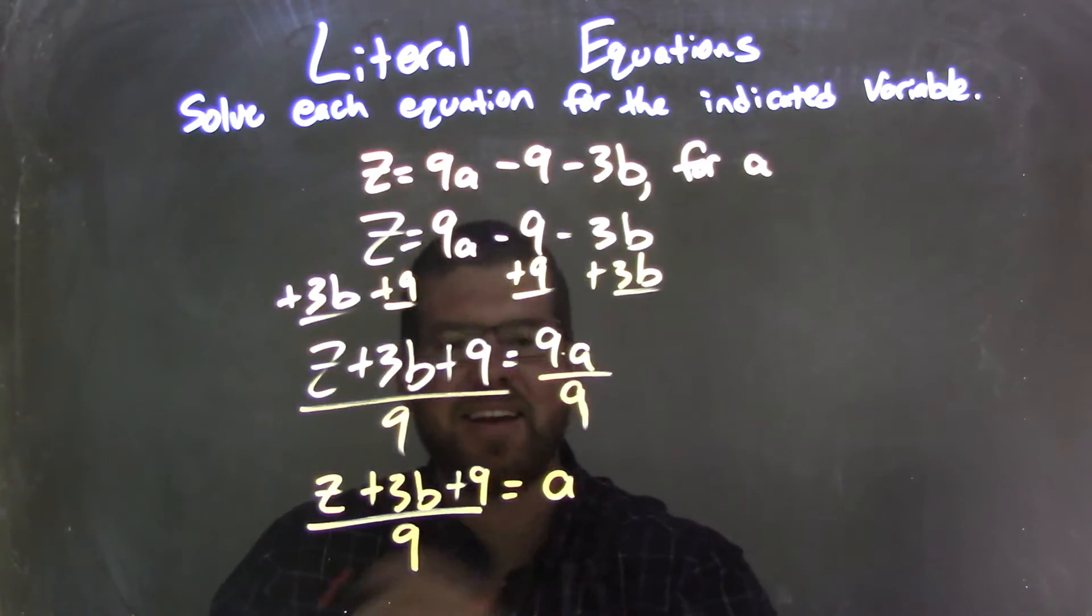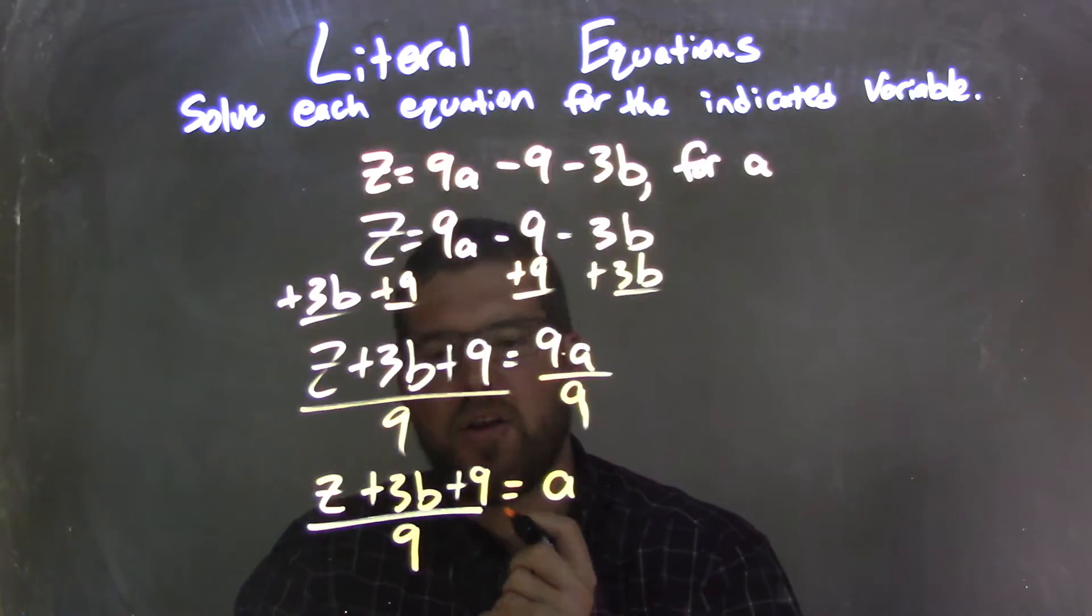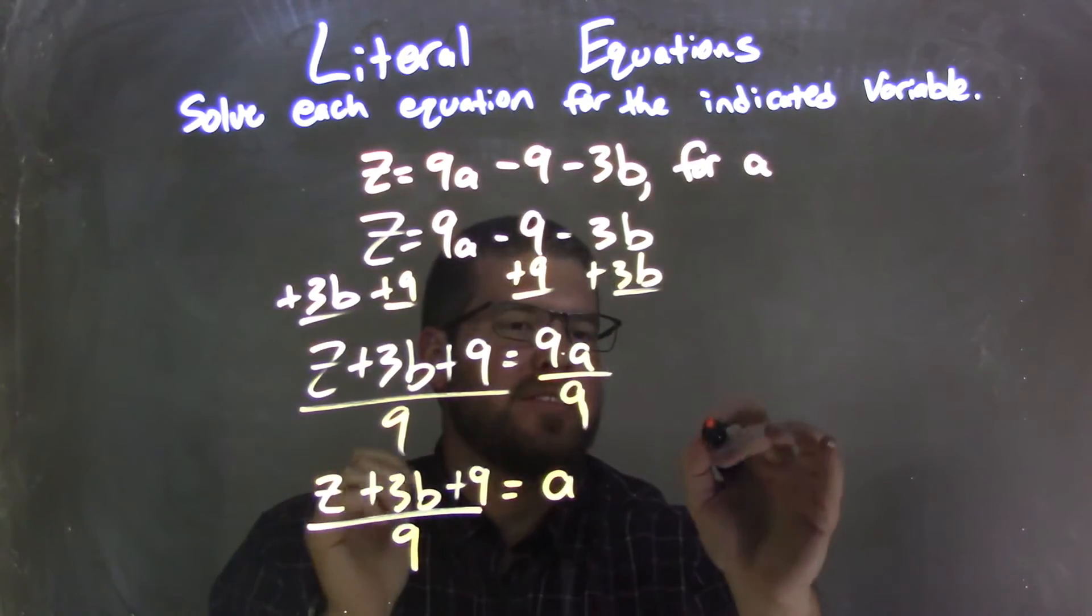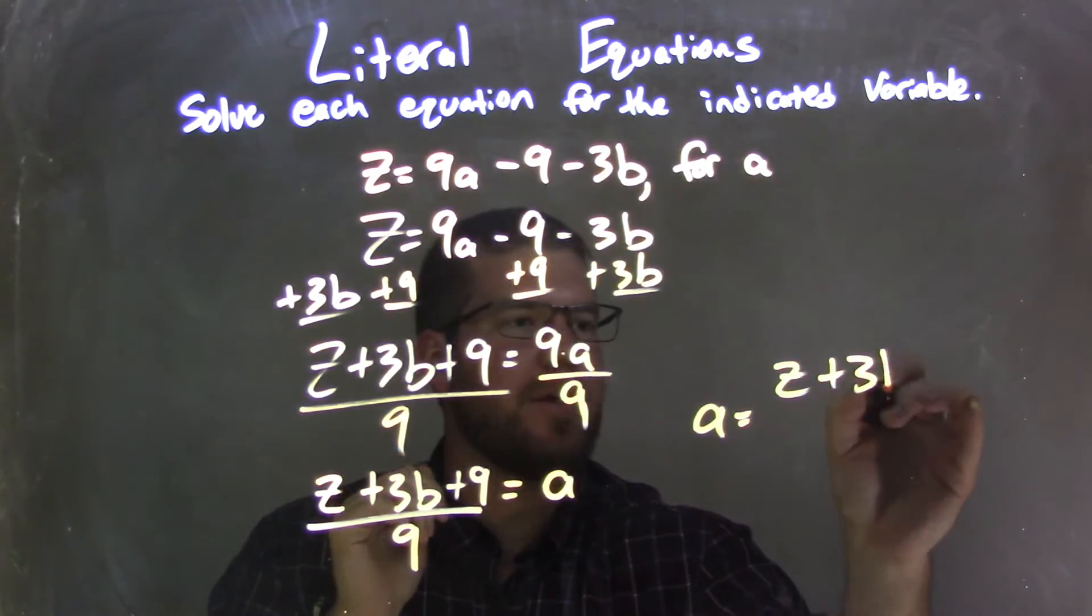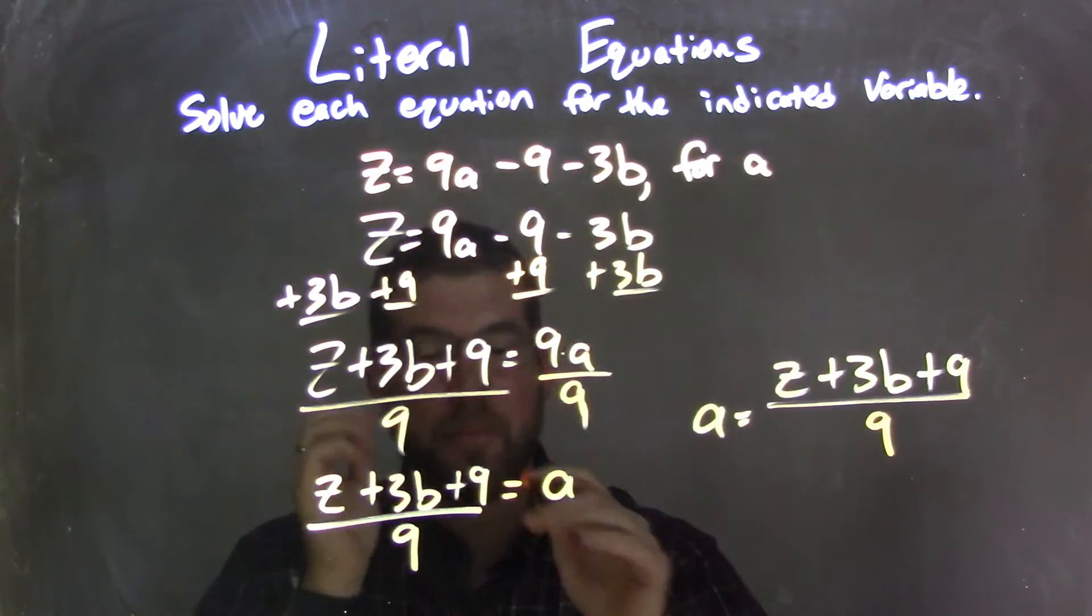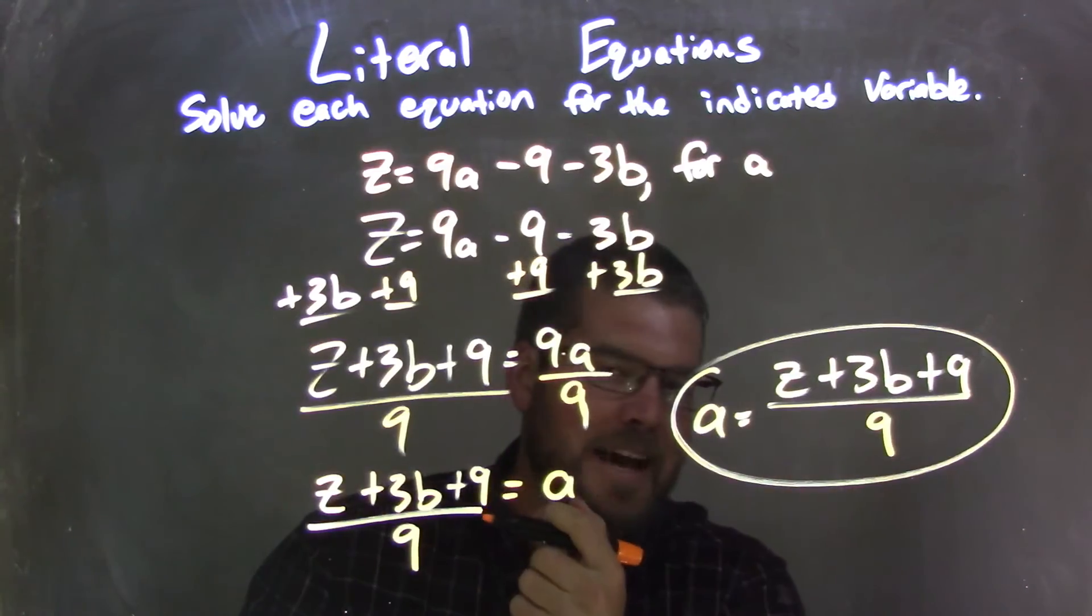And there we go. We have a isolated, it's by itself, and it's equal to z plus 3b plus 9 all over 9. Now I want to rewrite this with a coming first because it looks a little nicer. So I'm going to write it out like this: a equals z plus 3b plus 9 all over 9. That is our final answer.